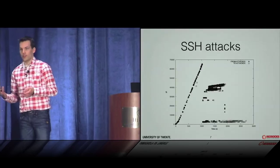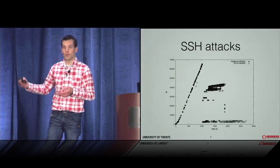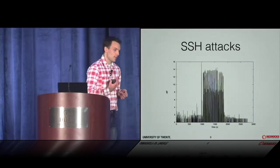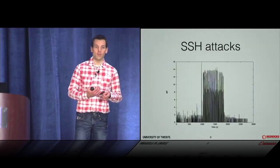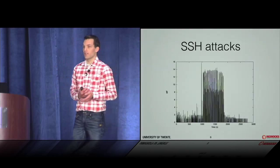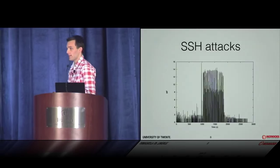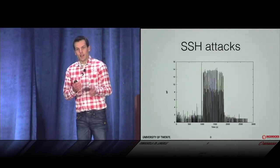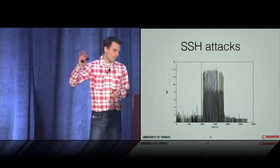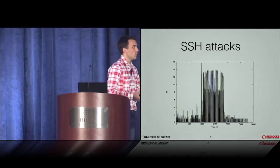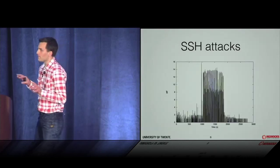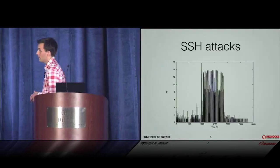Coming back to the three-phase attack model — scan, brute force, compromise — my colleague discovered that there's a metric, the number of packets per flow, that pretty well describes these three phases. During a network scan, we typically see roughly one, two, or three packets in a flow — just a TCP SYN packet probing a daemon. In the brute force phase, packets per flow is significantly higher, somewhere between 11 and 13 in this plot; our measurements show it can go up to 50, depending on the daemon's configuration.